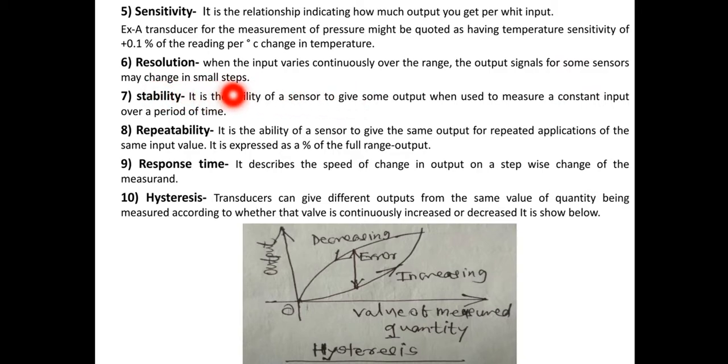Stability: it is the ability of the sensor to give same output when used to measure a constant input over a period of time. Repeatability: it is the ability of the sensor to give the same output for repeated applications.